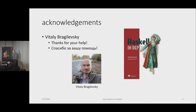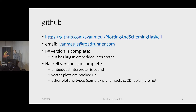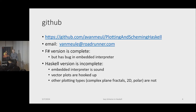I also want to acknowledge Vitaly Bragilevsky. I liked his book, and he answered a very important question — we'll get into that. Here's my GitHub for this project and my email. The GitHub has my F-sharp version and my Haskell version. The F-sharp version has a bug in the embedded interpreter, so I rewrote it in Haskell and I'm not going to update the F-sharp version. I became more interested in the embedded interpreter than the fractal plotting portion of it.